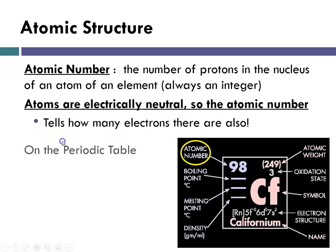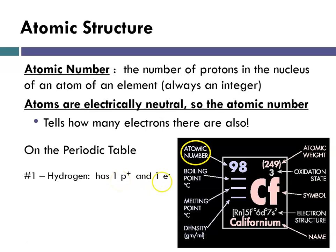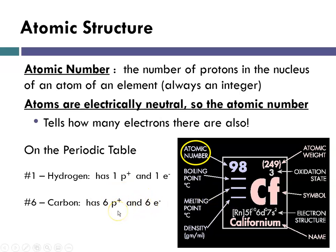For hydrogen, the atomic number is one, which means it has one proton in its nucleus — that's the identity, hydrogen — and it has one electron when it's neutral. For carbon with atomic number six, that means in the nucleus there are six protons, and if it's electrically neutral, then it has six electrons outside of the nucleus.